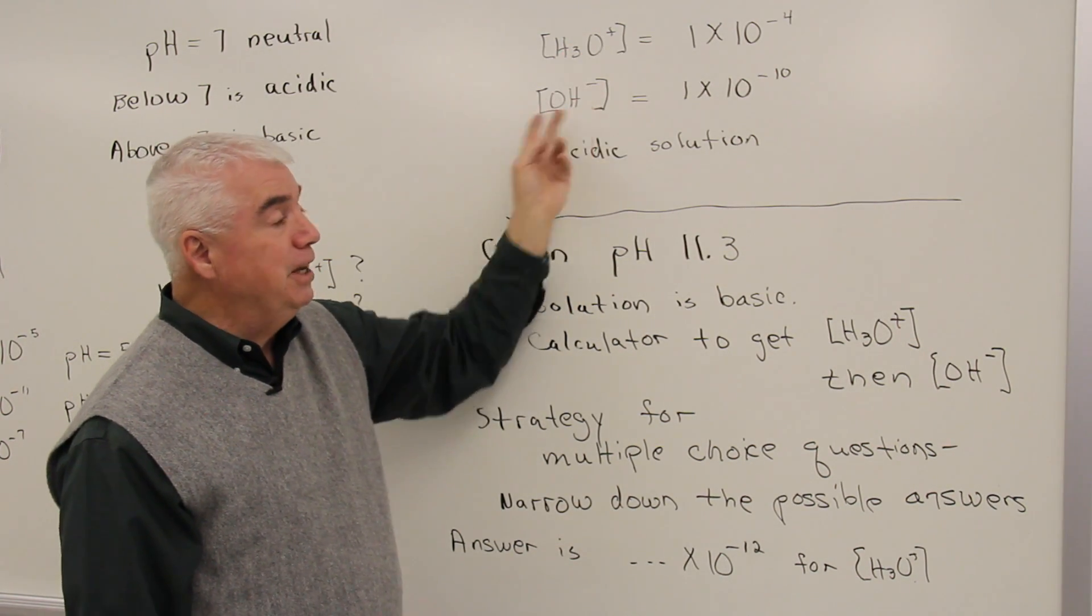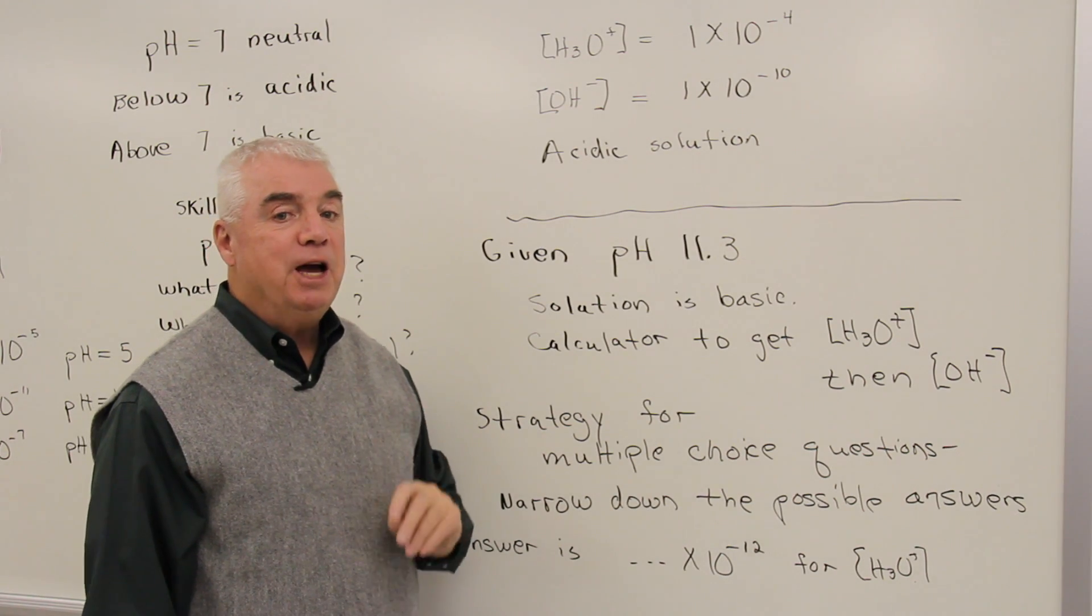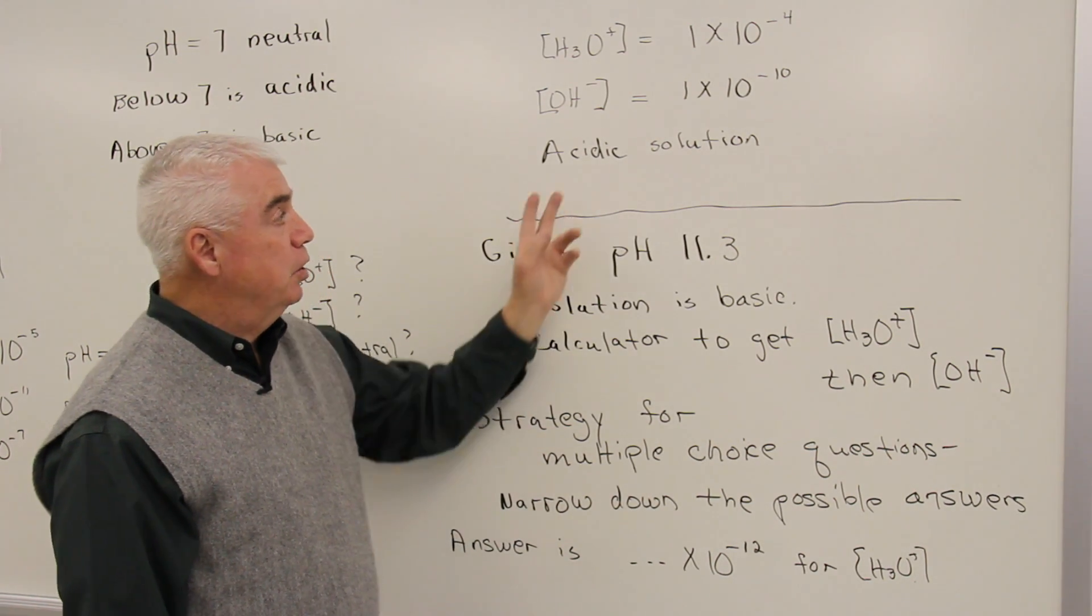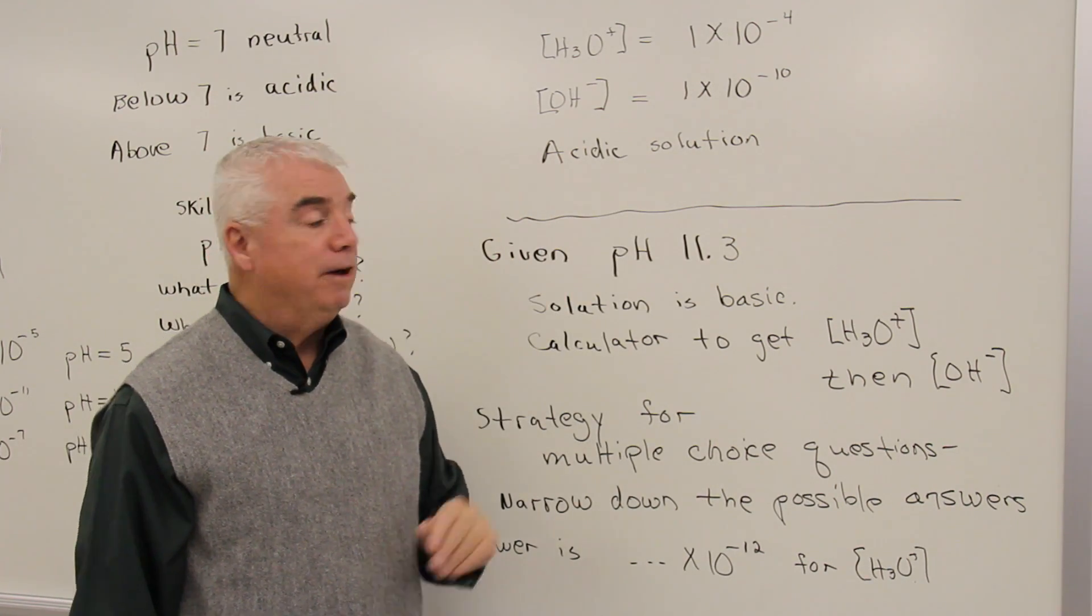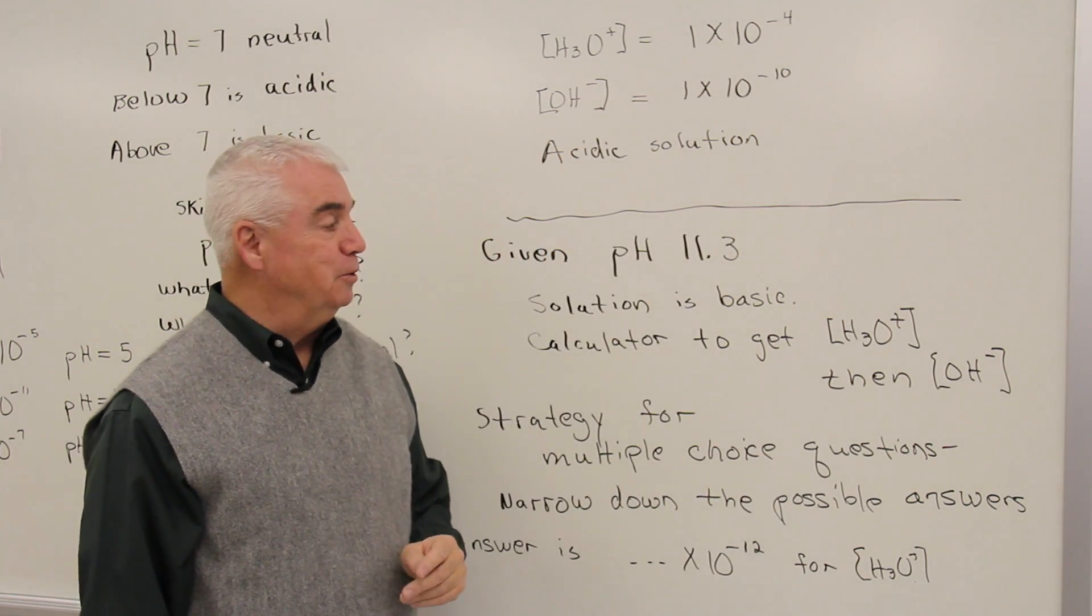And then finally, let's decide if it's an acidic, basic, or neutral solution. Comparing these two solutions can sometimes be confusing. So let's just keep in mind the pH. We said the pH was 4.